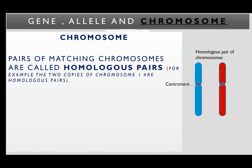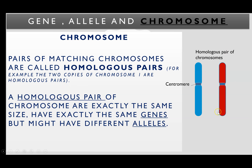The next thing about chromosomes is the idea of homologous pairs. Pairs of matching chromosomes are homologous pairs — for example, the two copies of chromosome 1. A homologous pair is when you have a chromosome which has exactly the same genes as another chromosome. They might have different alleles, but they have identical genes. This occurs from fertilization: when the sperm and egg fuse, the sperm contributes one chromosome and the egg contributes the other. That's how humans end up with 23 pairs — the sperm and egg each contain 23, combined you have 46.